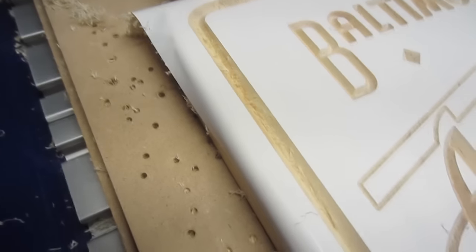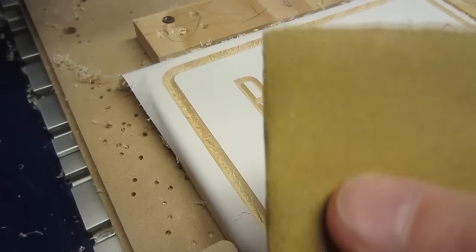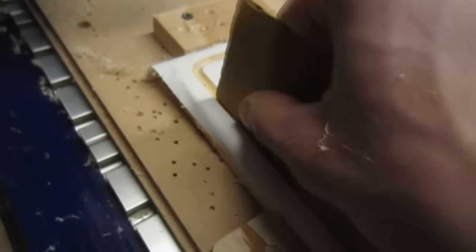For the most part, the carving came out clean. There were a few fuzzies left in the outer border of the sign, but those can easily be removed with a folded piece of sandpaper.